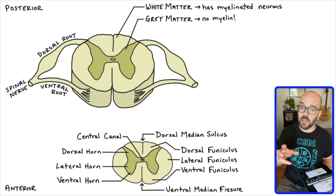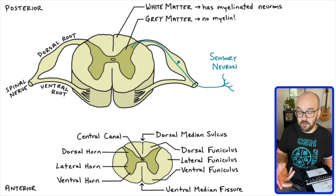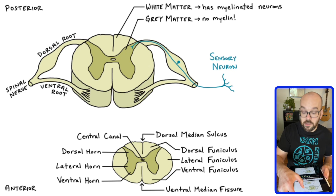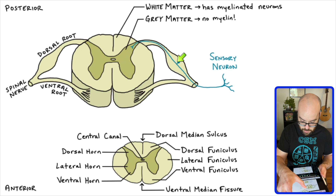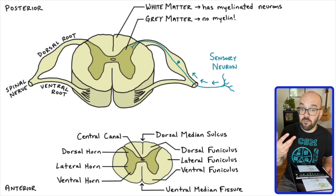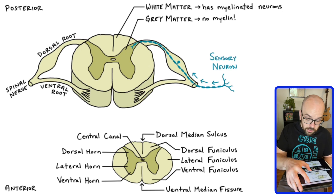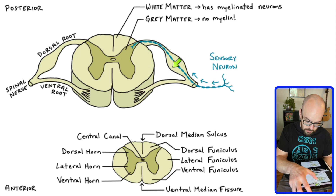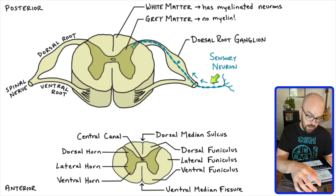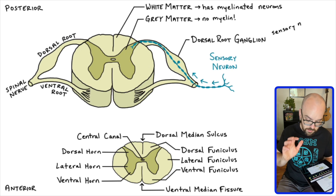Now let's talk about what's happening in this cross-section of the spinal cord — the physiology. I'm going to draw in a few neurons, starting with a sensory neuron. A sensory neuron is any neuron sending signals toward the brain. A signal comes in through the dorsal root, passes by a cell body, and then through the axon into the gray matter. Since this is all in white matter, we have myelinated axons — the myelin sheaths insulate the neuron and make the signal travel faster. The cell body is located in a bulge on the dorsal root called the dorsal root ganglion, where all the cell bodies of the many sensory neurons are bunched together.